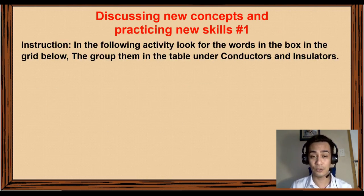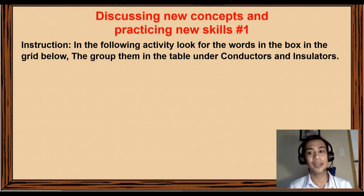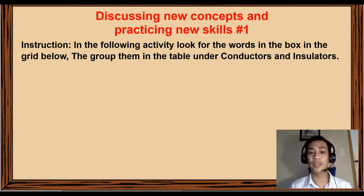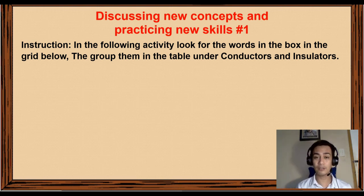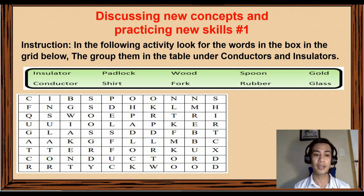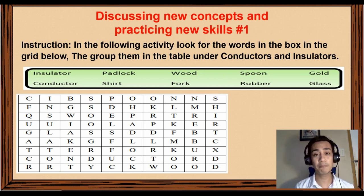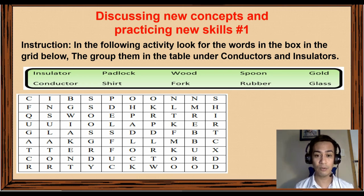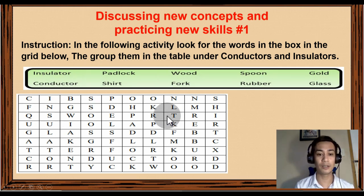For our activity, look for the words in the box in the grid below, then group them in the table under conductors and insulators. Find the words inside the word bank and look for them in the puzzle. I'll give you some time — you can pause the video, write down the activity, and look for the words.